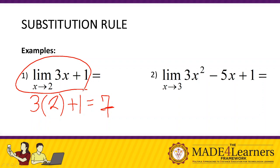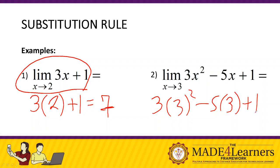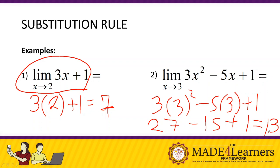For number two, we have the limit of 3x² − 5x + 1 as x approaches 3. Using substitution: 3 times 3 squared minus 5 times 3 plus 1. That gives us 3 times 9 = 27, minus 15, plus 1. So 27 − 15 = 12, and 12 + 1 = 13. The answer is 13.